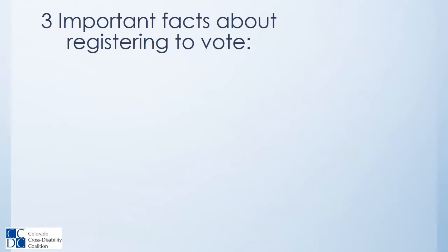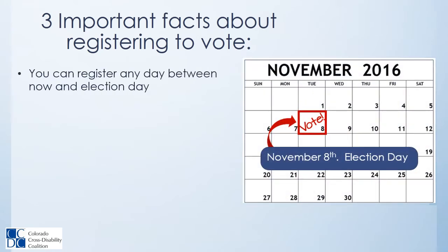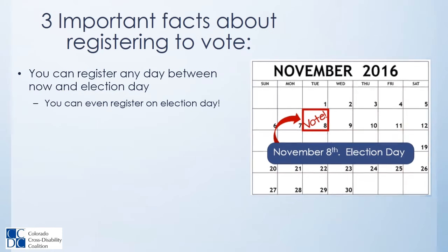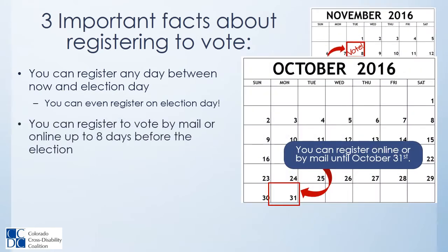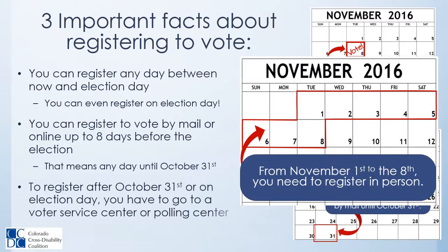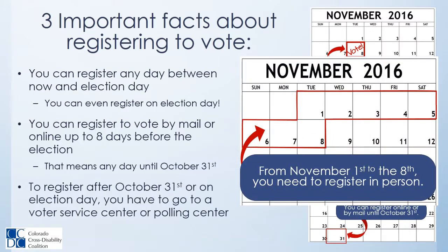Three important facts about registering to vote. You can register any day between now and election day — you can even register on election day. You can register to vote by mail or online up to eight days before the election, meaning any day until October 31st. To register after October 31st or on election day, you have to go to a voter service center or polling center. From November 1st to the 8th, you need to register in person.